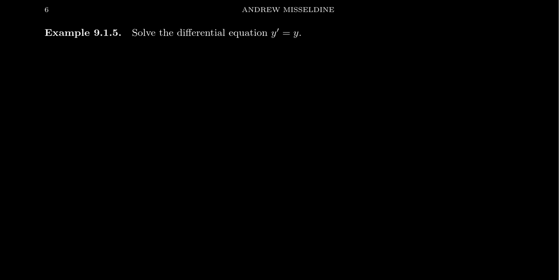Hopefully we can think of one — we've seen it before. Take y equals e to the x, because e to the x is a really important function in calculus: e to the x is equal to its own derivative. And as such, it's a solution to this differential equation. The left-hand side and the right-hand side are both e to the x. It works.